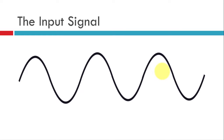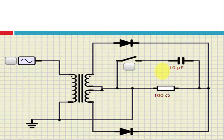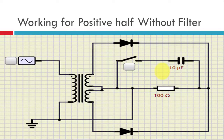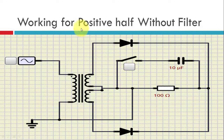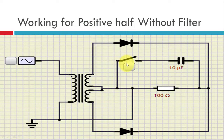So this is the input signal — a sine wave, the AC input. Now let us see the working without the filter. The switch is open. We will study the working without the filter and see what happens during the positive half of the AC.